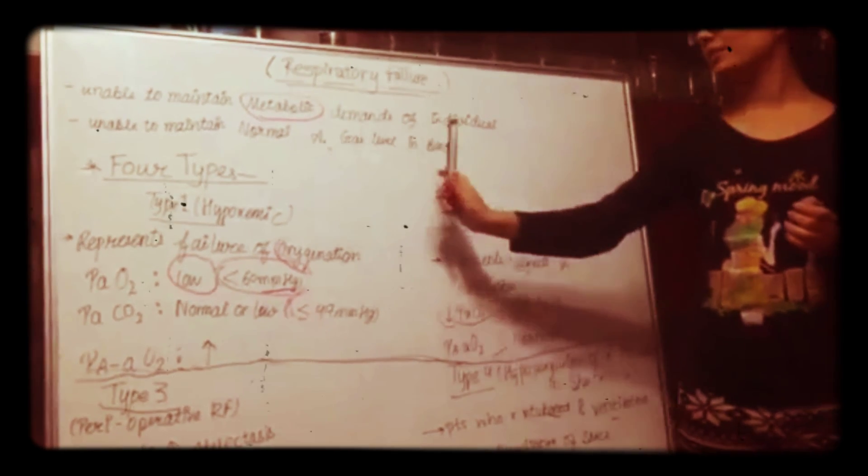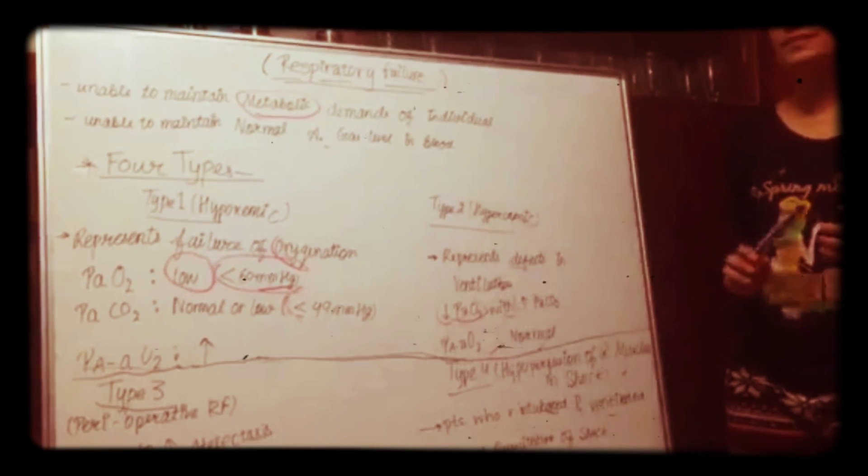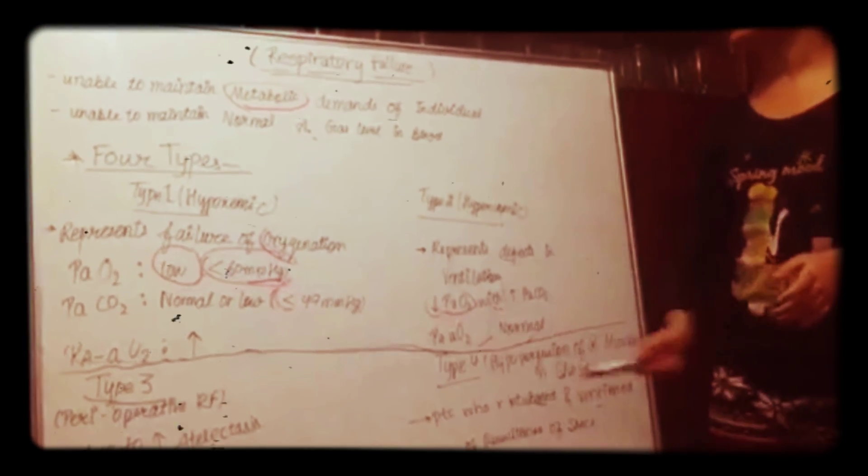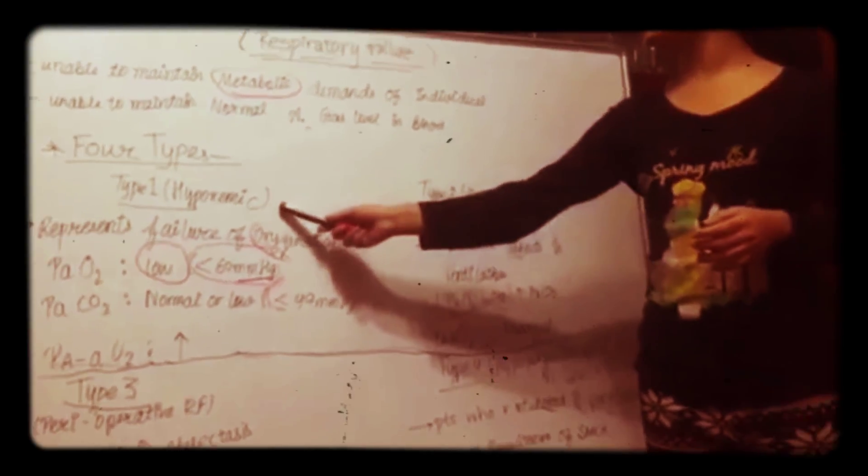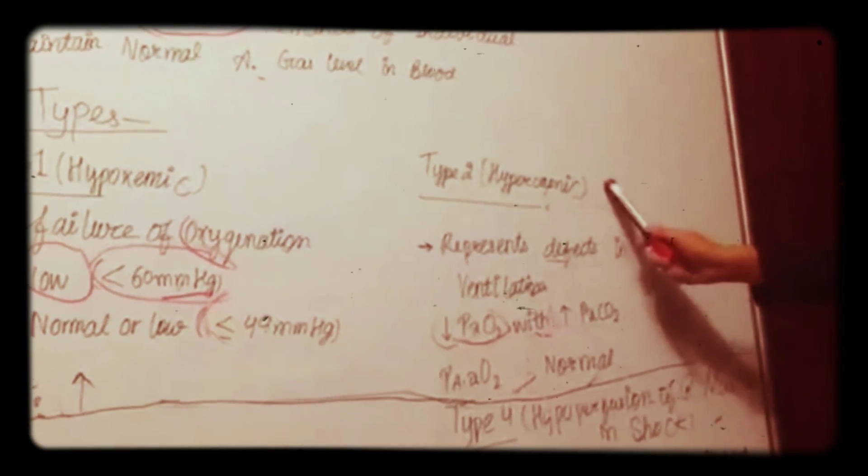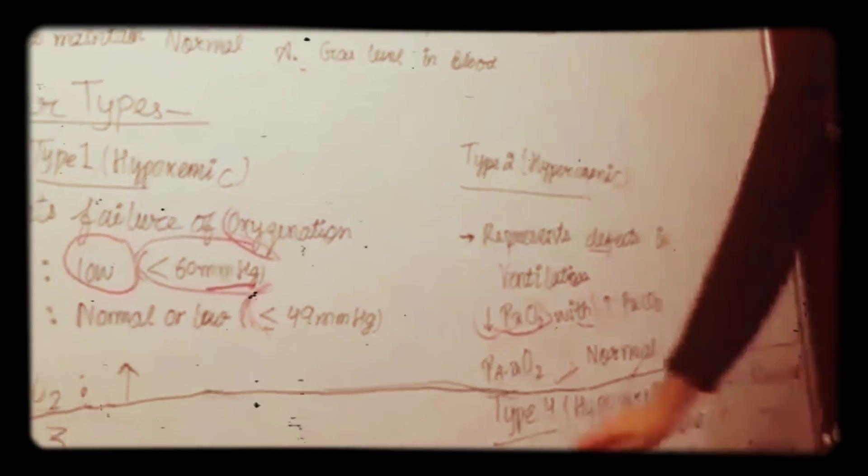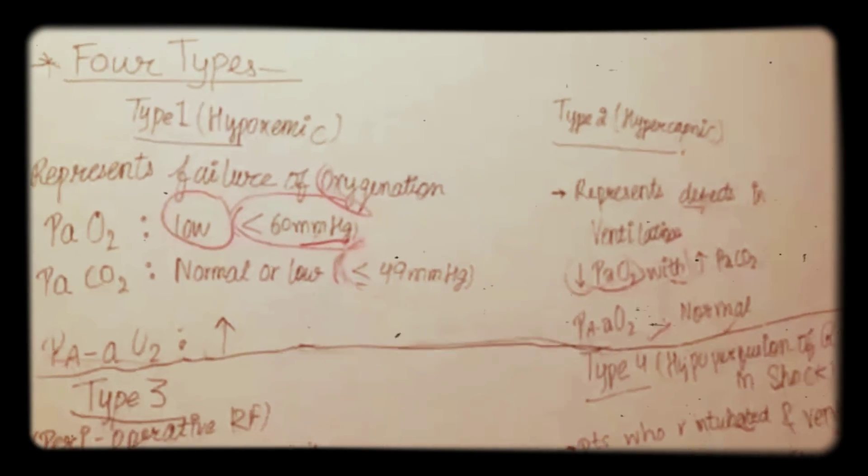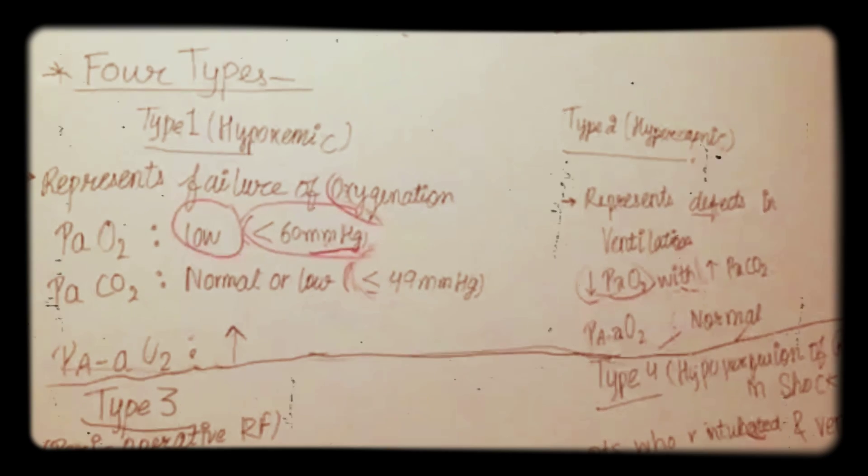These are four types: type 1, type 2, type 3 and type 4. Type 1 is hypoxemic respiratory failure, type 2 is hypercapnic respiratory failure, type 3 is perioperative respiratory failure, and type 4 is hypoperfusion of respiratory muscles in shock.